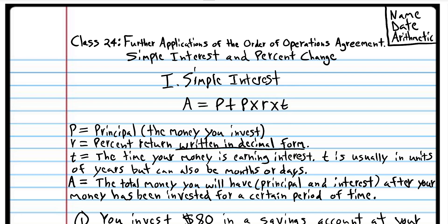Interest can be paid per year — in that case you would make $1. But interest can also be paid per month. If the bank pays you 1% simple interest per month, then after one year you would make $12 and have a total of $112 in your bank account. If the interest is paid per day, you would have $465 in your bank account — the original $100 plus $365. But normally interest is paid per year. It depends on how often the interest is paid. So that's simple interest.